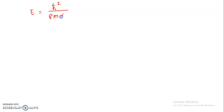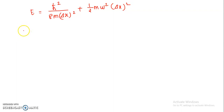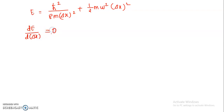Simplifying, we get E = ħ² / (8mΔx²) + half mω²Δx². We know that the ground state energy is the minimum energy available to the linear harmonic oscillator. So for the case of minimum energy, we can write dE / d(Δx) = 0.